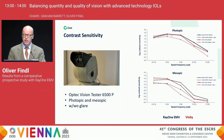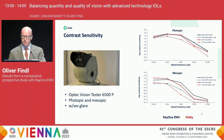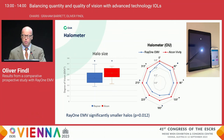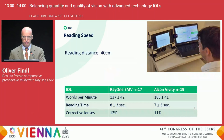Regarding contrast sensitivity: in black, the Ray-1 EMV photopic, then photopic with glare, and mesopic; in red, the Vivity photopic and including glare. The Vivity is lower than the Ray-1 EMV across pretty much many of these spatial frequencies. Regarding halo size, the halo size for the Vivity is larger, and that is statistically significant, as shown in the box plots.